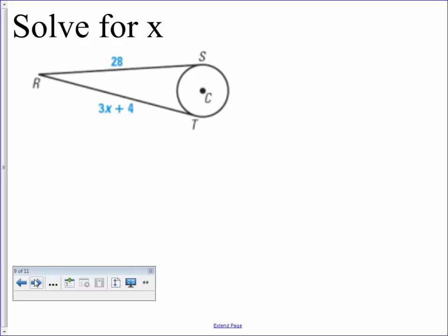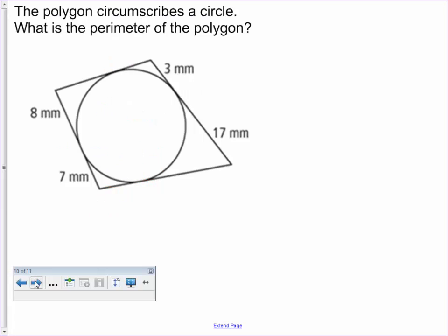This one is just asking us to solve for x. So because they're tangent, and they come from a common end point, we're just going to set them equal. 3x plus 4 equals 28. Subtract the 4, so you get 3x equals 24. Divide by 3, x equals 8.